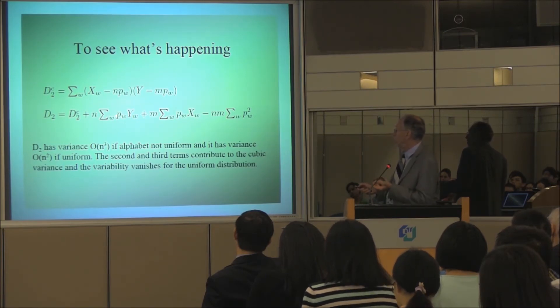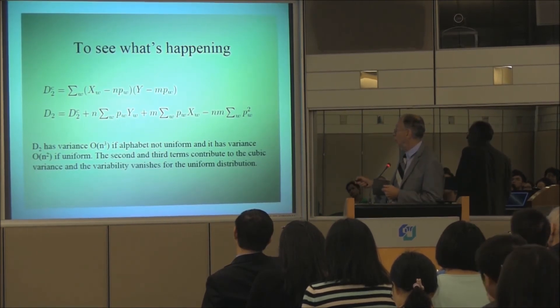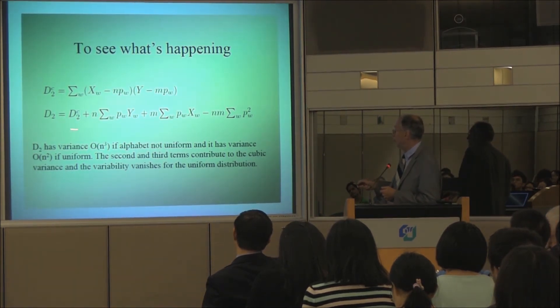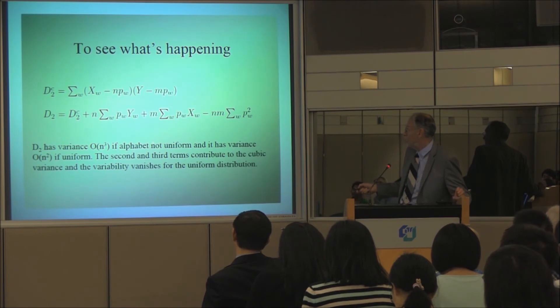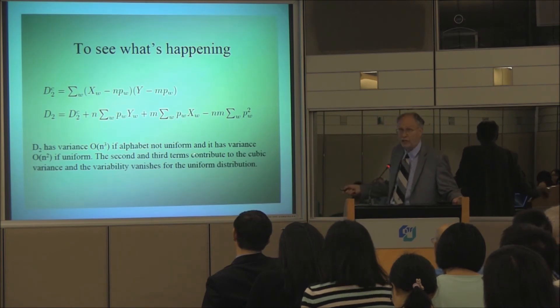If the underlying alphabet is uniform, then this is a constant and this is a constant. And this whole thing just comes out to being a constant. So your variability is just in this D2 centered. But if they're not uniform, then this has variability and in fact changes even the variance of the D2 statistic. It's cubic variance if the alphabet's not uniform and it's quadratic if it is. And misleading actually if it's not uniform.